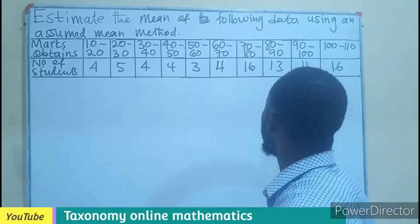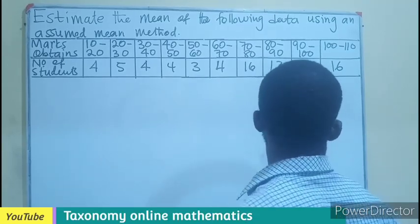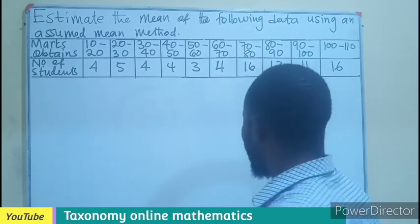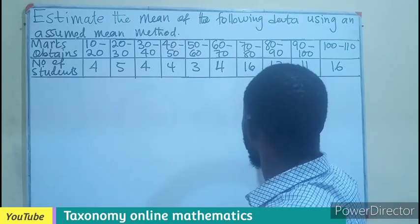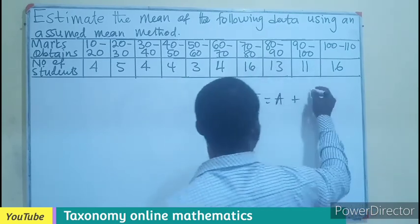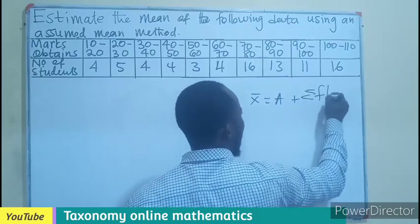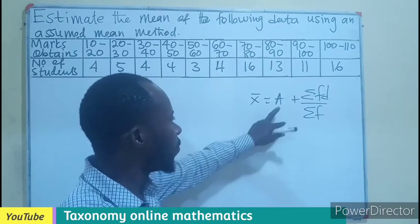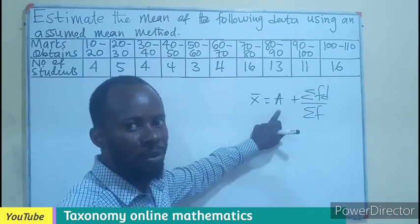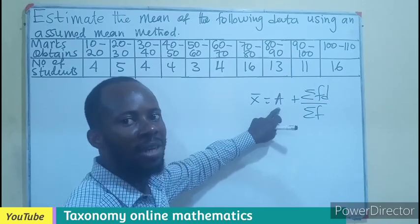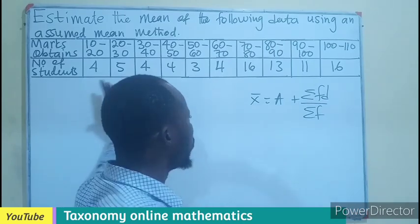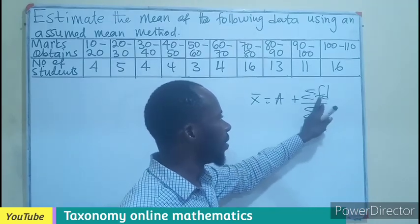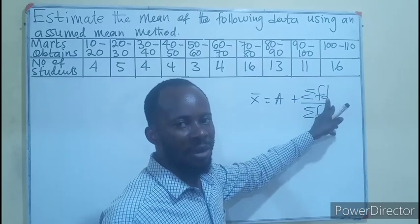For us to use an assumed mean method, the formula is A plus sigma fD over sigma f, where A stands for the assumed mean. In some cases you'll be given the assumed mean, in some cases you have to assume the mean in your data. Then sigma fD simply means the frequency times the deviation of each data from the assumption, and we use the total frequency.